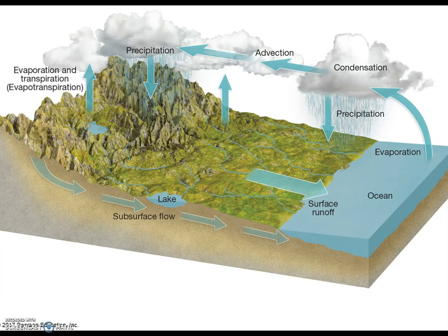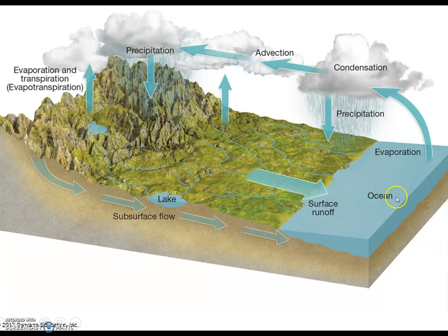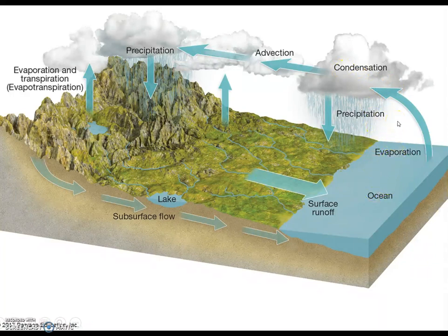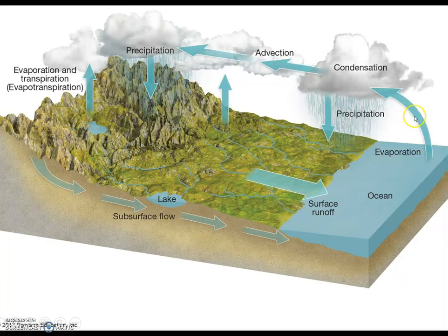Let's go back and look at the textbook diagram of the hydrologic cycle and see where a good place to start our model would be. One obvious place to start would be the ocean, where over 97% of the Earth's water is located. So the ocean is a good pool for our model, and the process by which water comes out of the ocean would be evaporation. Water does not go directly into clouds — the next pool that water enters is called atmospheric moisture. Water goes from the ocean pool through evaporation to atmospheric moisture, and from there it can undergo condensation to reach the cloud pool.